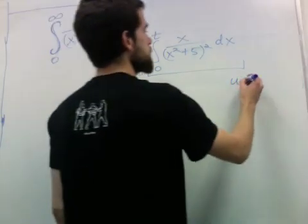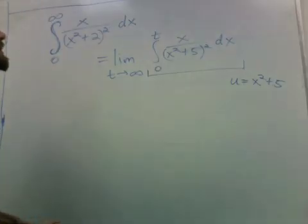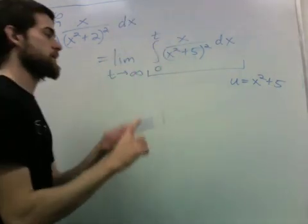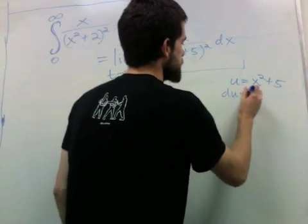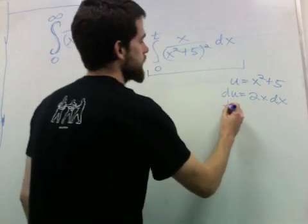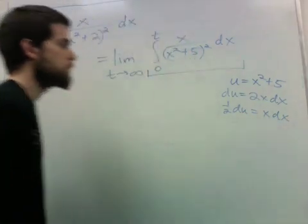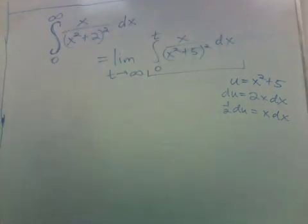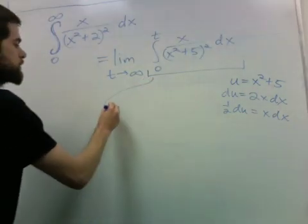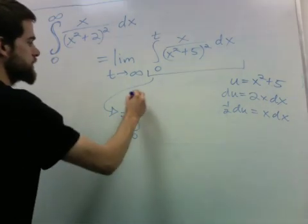Say u equals x squared plus 5. We know this will work because there's an x on top, so we have du is 2x dx, one half du equals x dx. So the integral goes from zero to t, we have one half du over u squared.